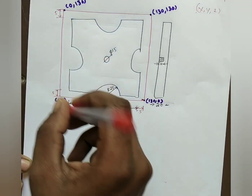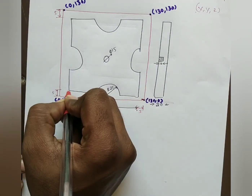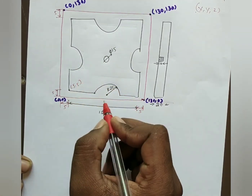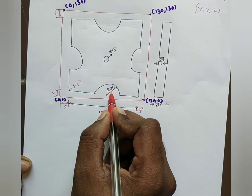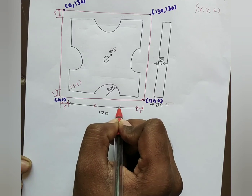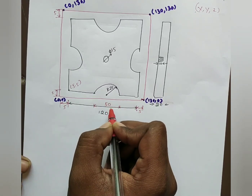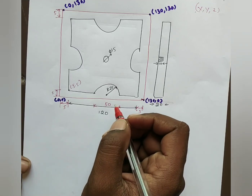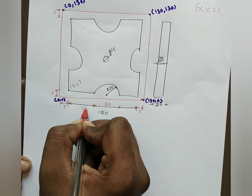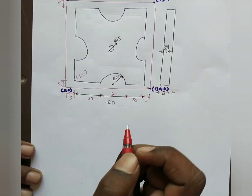Now let us write the coordinates for the profile given inside the work material. At this point x value is 5 and y value is 5. The radius given in the profile is 25, therefore from this point to this point the value will be 50. So 120 minus 50 is 70, and 70 divided by 2 is 35. Therefore from this point to this point the dimension is 35 on each side.